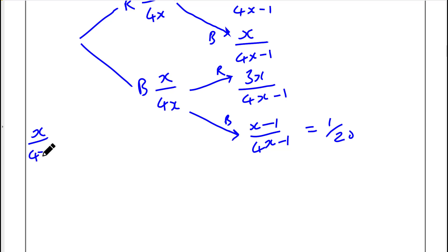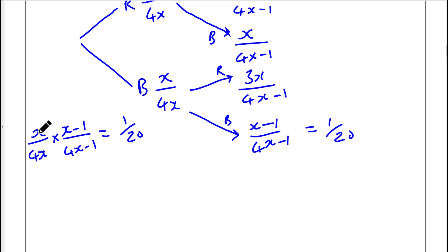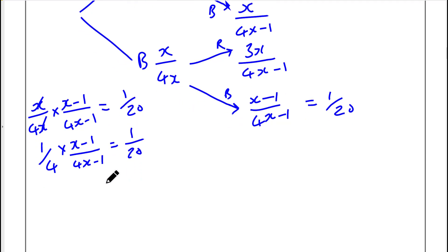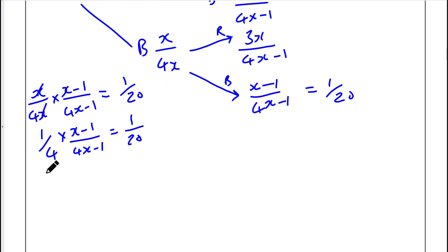So we write: x over 4x times x minus 1 over 4x minus 1 equals 1 over 20. We can simplify by cancelling the x in the first fraction: that becomes 1 over 4. So we get 1 over 4 times x minus 1 over 4x minus 1 equals 1 over 20, which combines to x minus 1 over 16x minus 4 equals 1 over 20.